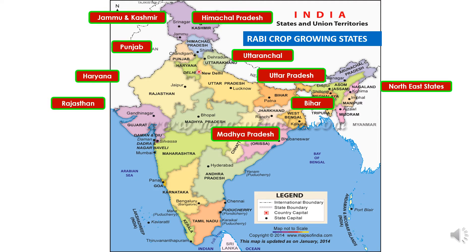Here we have shown the map of India indicating the states which play a major role in cultivating Rabi season crops. These states include Himachal Pradesh, Uttaranchal, Uttar Pradesh, northeast states, Bihar, Madhya Pradesh, Rajasthan, Haryana, Punjab, and Jammu & Kashmir, which grow Rabi season crops because of their cool weather requirements.